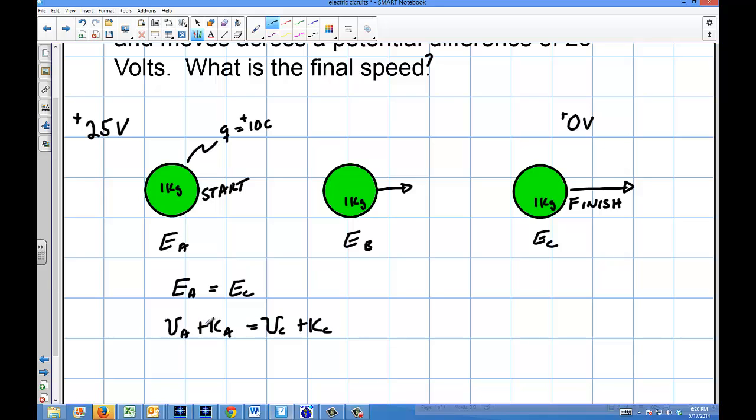So we're starting from rest, so the kinetic at A is zero, and I'm ending up at max speed with no potential at the end, so that potential is zero. So the potential of a charge in a field is going to be QV, the voltage at that point, and it's going to equal one half mv squared.